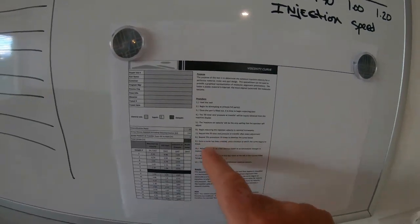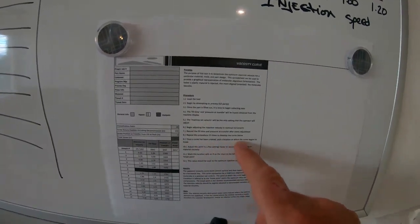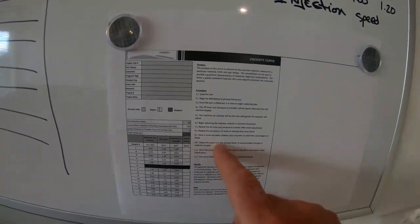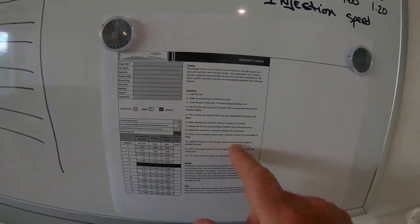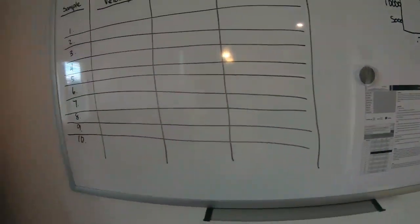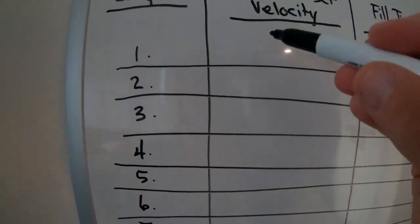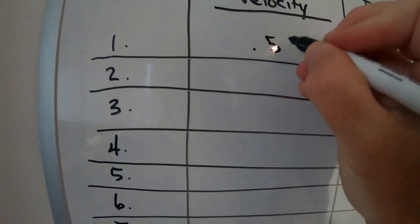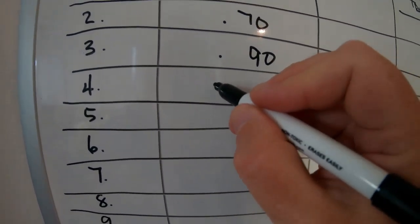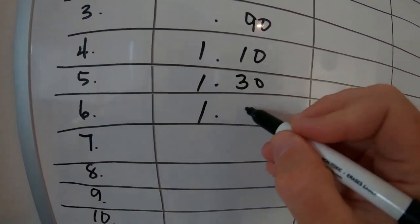Begin adjusting the injection velocity in normal increments, recording the fill time and pressure at transfer for every adjustment. Repeat this for 15 steps. Once a curve has been created, pick a location on the curve beginning at the break point. Adjust the setting a few points to accommodate any change in material viscosity. On the chart, you'll start off with speeds like 0.5, then 0.7, then 0.9, 1.1, 1.3 inches per second, and keep going up.